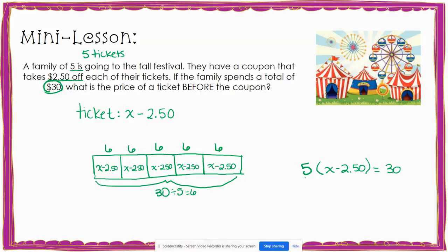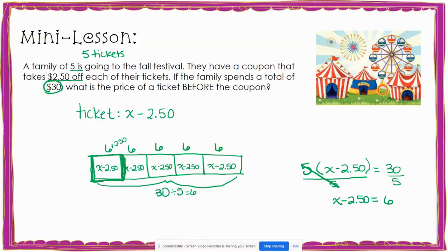I can show this in my equation by dividing both sides by 5. On the left side, the fives cancel to leave me with x minus $2.50. On the right side, 30 divided by 5 gives me 6. On my tape diagram, each box is 6, so to find the cost of just one ticket, I need to find x by doing the inverse of subtracting $2.50, which is adding $2.50. When I add 6 plus $2.50, I get $8.50.